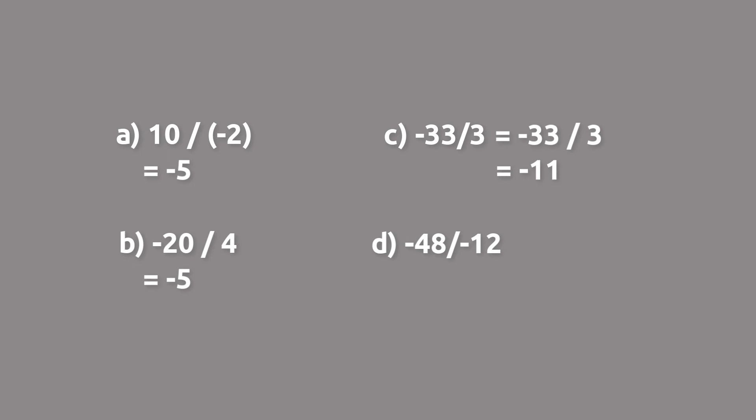And then with part d, we can rewrite this as our typical division problem. It's negative 48 divided by negative 12. We know that is going to be positive because both values are negative, and a negative divided by a negative is a positive, similar to a negative times a negative is a positive.